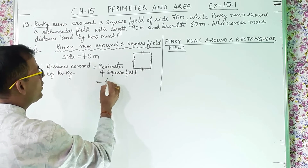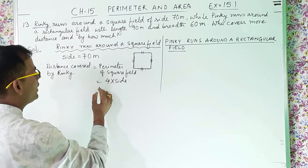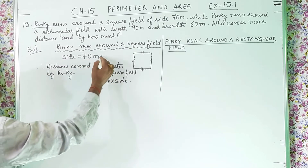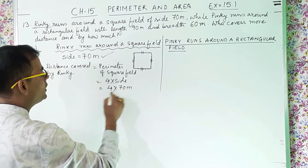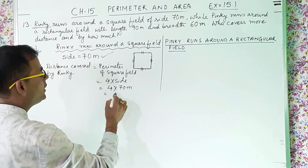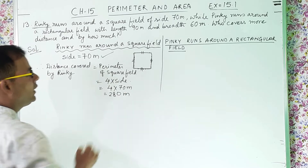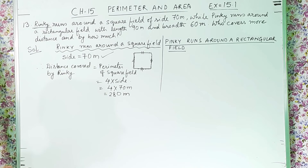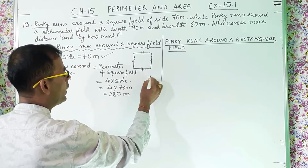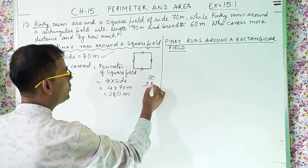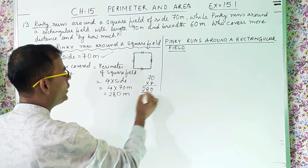Perimeter of square field is 4 into side and the side is 70 meter. So 4 into 70 meter gives us 280 meter. If you cannot find out orally, you can multiply 70 into 4: 4 zeros are 0, 4 sevens are 28, so 280 meter.